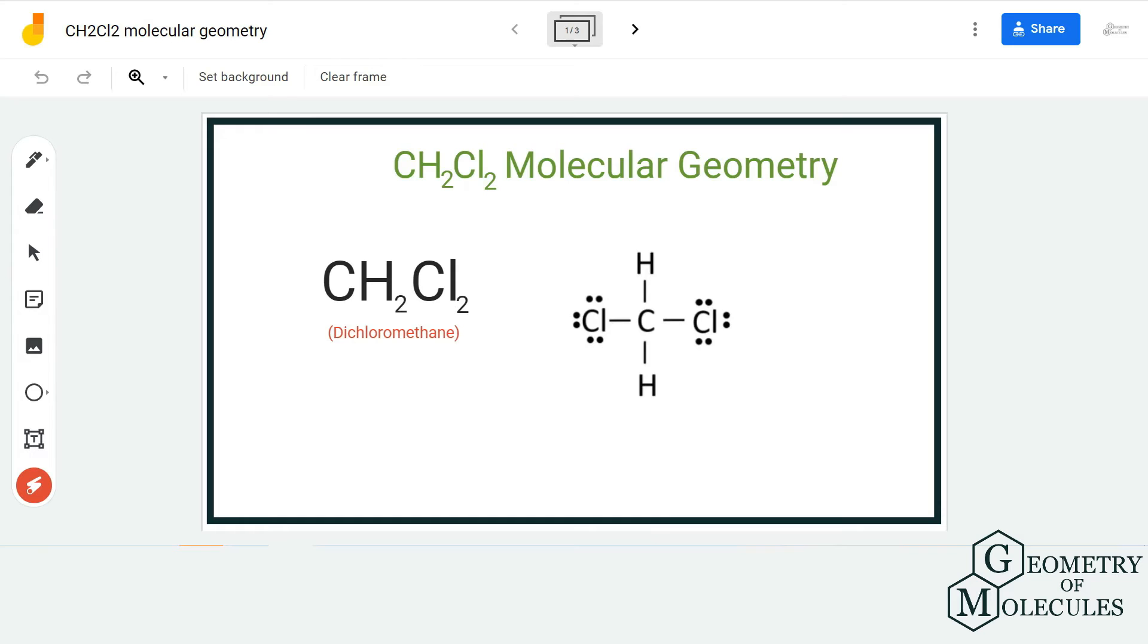Hi guys, welcome back to our channel. In today's video we are going to help you determine the molecular geometry of CH2Cl2 molecule. It comprises one carbon atom, two chlorine atoms, and two hydrogen atoms.